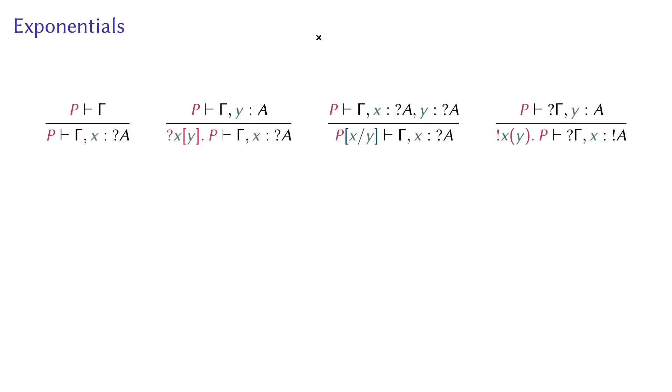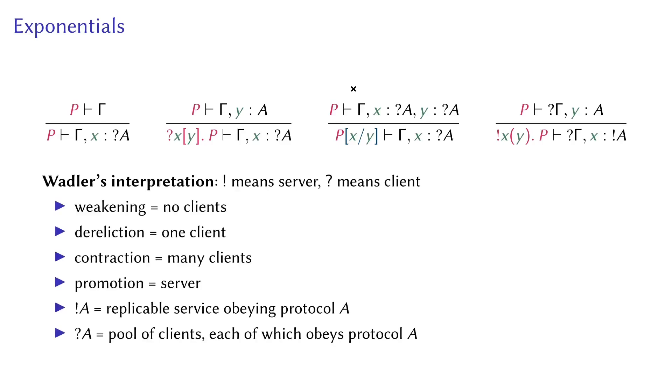We now turn our eyes to exponentials, where we improve over previous works. Here are the rules, and let's go through them in Wadler's interpretation. The gist is that bang means server and question mark means client.